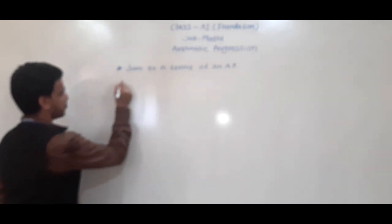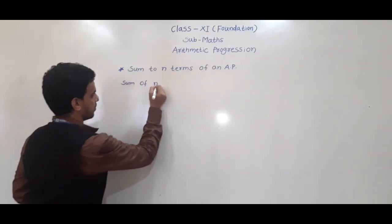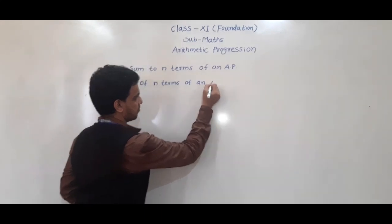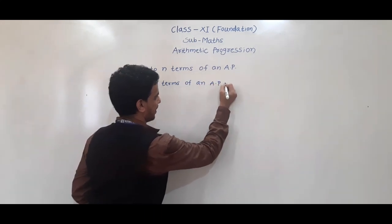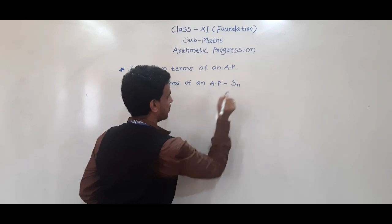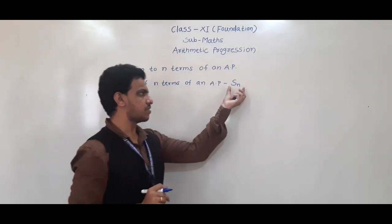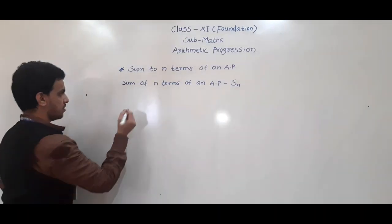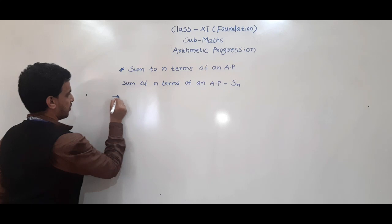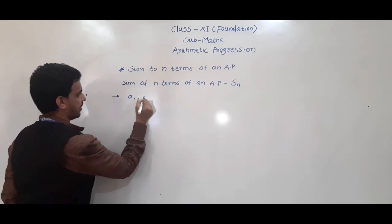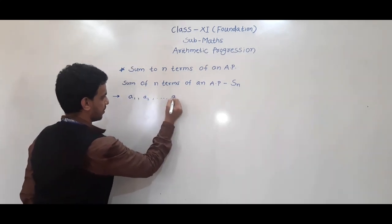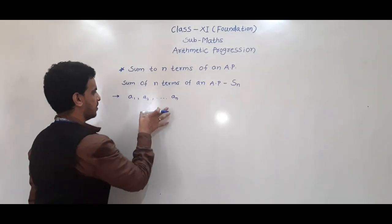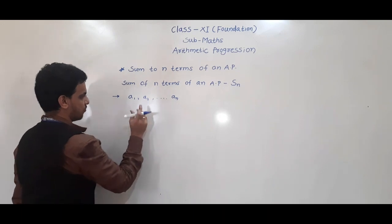So sum of n terms of an AP, we denote it as Sn. Sn means sum of n terms of an AP. So here A1, A2 up to An — these are n terms of an AP. Then we have to find the sum of n terms of an AP.